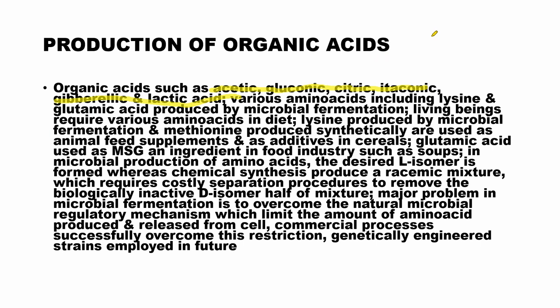All those are examples of organic acids which are naturally present in fruits and food products like milk. Apart from organic acids, various amino acids — for example lysine and glutamic acid — can also be produced by microbial fermentation. So if we want to produce any of these organic acids or amino acids in large quantity for industrial purposes, we have to rely upon microbial fermentation.